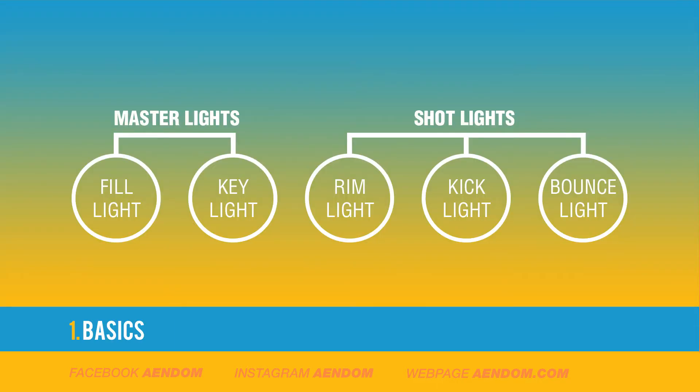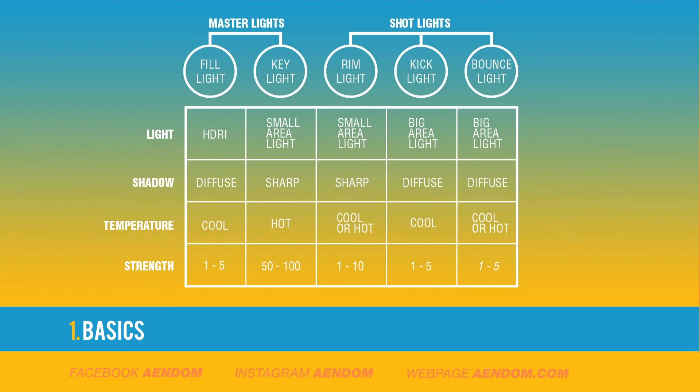We have five types of lights: key light and fill light, both of them in the master lights category, rim light, kick light and bounce light in the shots category. In this table I divide the five types of light, the type of light inside Blender — if it's HDRI, a small area light or a big area light — the type of shadow, if it's diffuse or sharp, the temperature, if it's cool or hot, and also the intensity of the light.